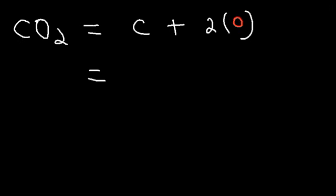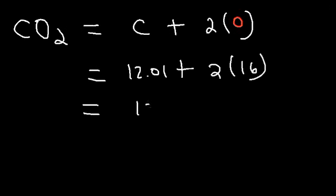The atomic weight for carbon, you simply need to replace C with 12.01. And the atomic weight for oxygen, according to the periodic table, it's approximately 16. Two times 16 is 32. And if you add 12.01 to it, you should get 44.01.